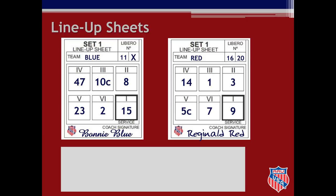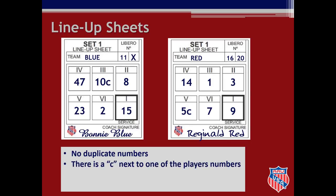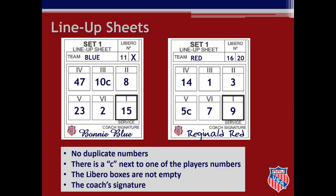The teams will give their signed lineup sheets for the first set to either you or the second referee at least two minutes before the end of the last warm-up period. Between sets, teams must turn their lineups in at least 30 seconds prior to the interval between sets expiring. When you receive the lineup sheet, check that there are no duplicate numbers, one regular player has a C next to their number denoting the game captain, there are numbers or an X in the libero boxes, and the coach has signed the lineup sheet. If you find issues, ask the second referee to verify the lineup information. If libero boxes are blank, have the second referee verify with the coach. Teams must turn in a lineup for every set — they cannot ask you to use the lineup from a previous set.